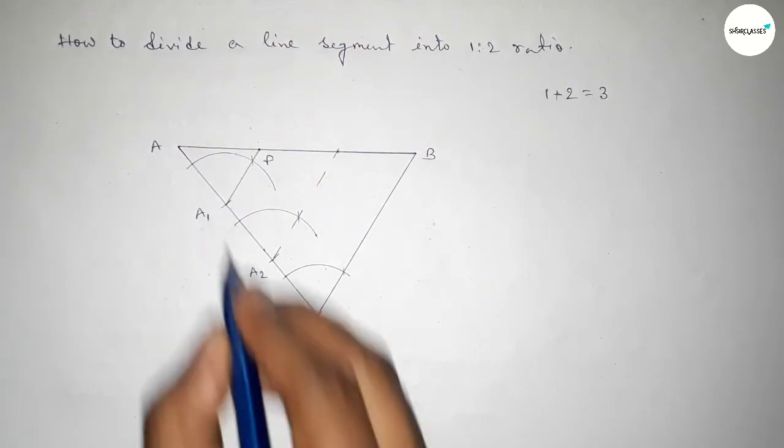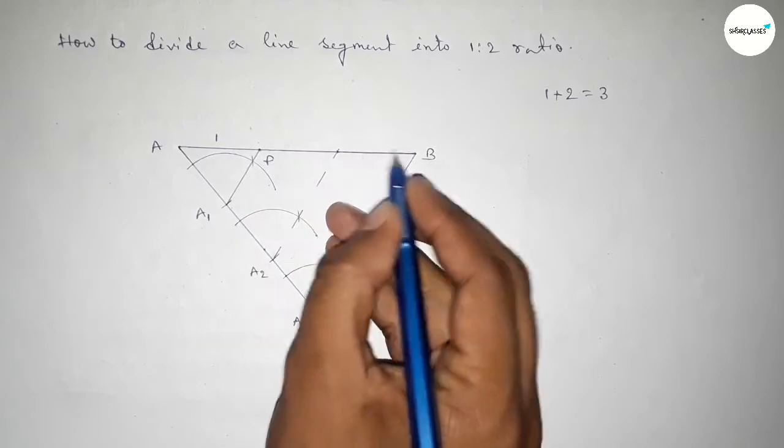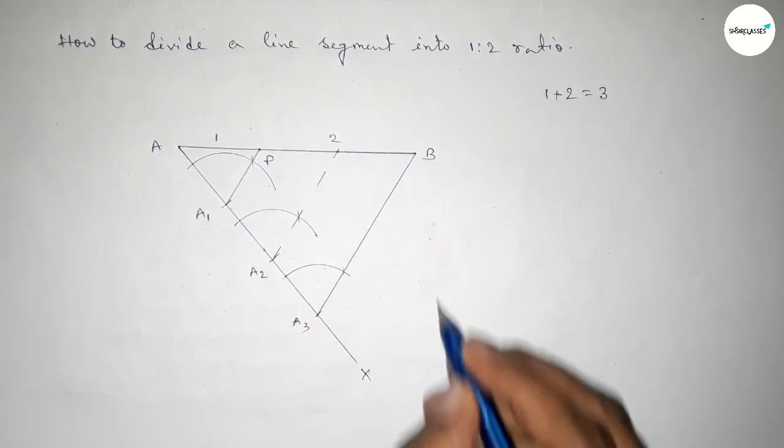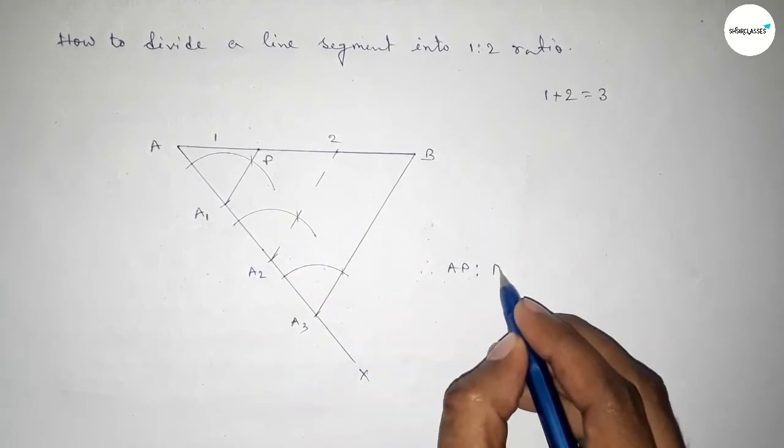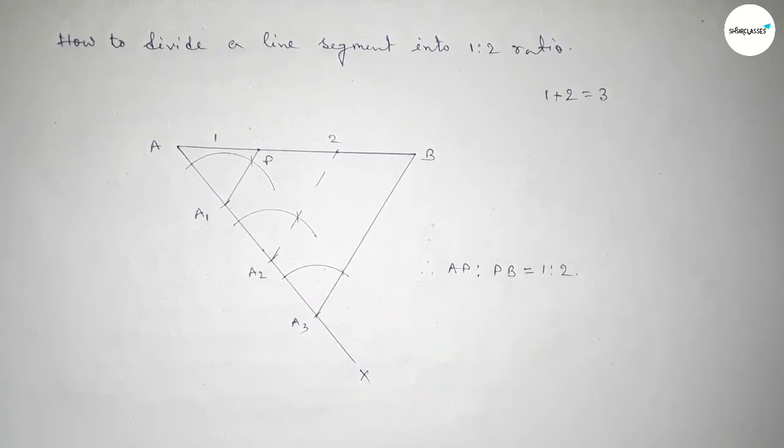Basically this is perfect. So this one, one, and this one, two. Therefore AP is to PB equal to 1 is to 2. So this is the process to divide a line segment. That's all, thanks for watching.